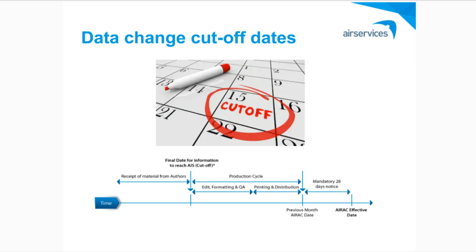While many of you are familiar with the 28-day ARAC cycle for changing aeronautical data, another important point I'd like to highlight is our data cut-off dates. To allow us to manage the large amount of data that we publish in our products, we create and publish a document amendment calendar, which is available on the Air Services website. It's important to note that if we receive a data change request after these public cut-off dates, we cannot accept that change for the next update of that product — it will be entered in the following subsequent update.